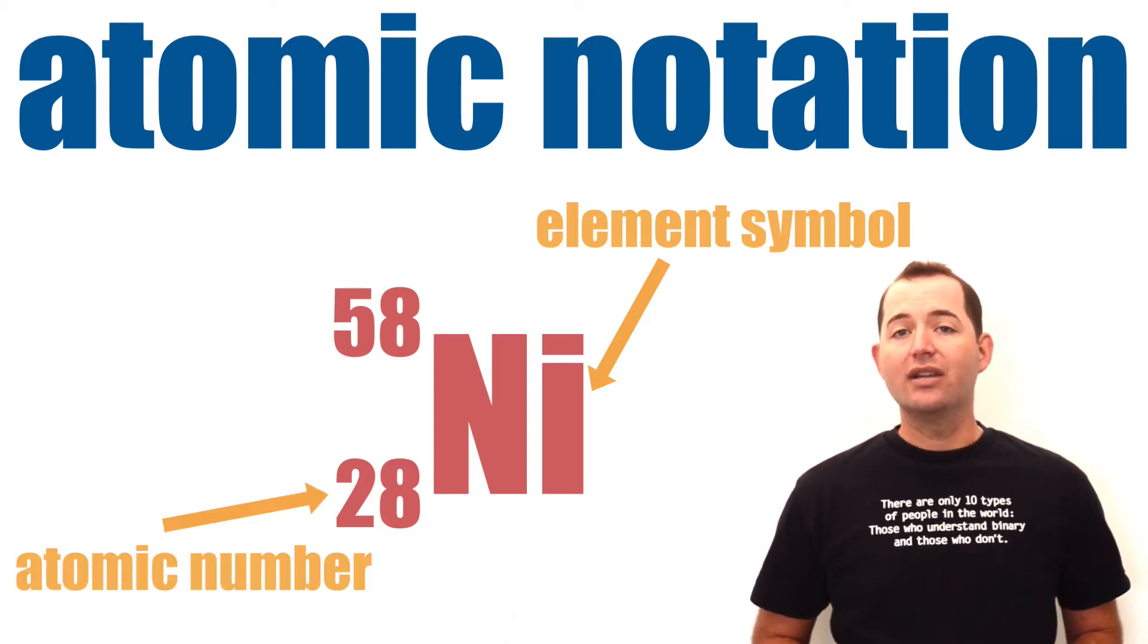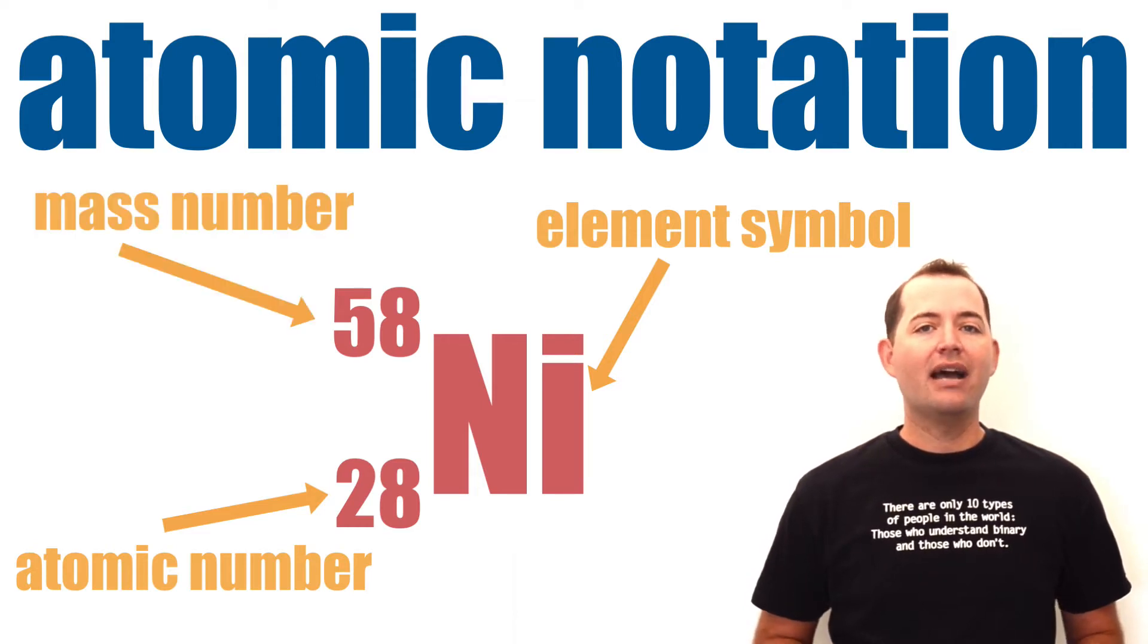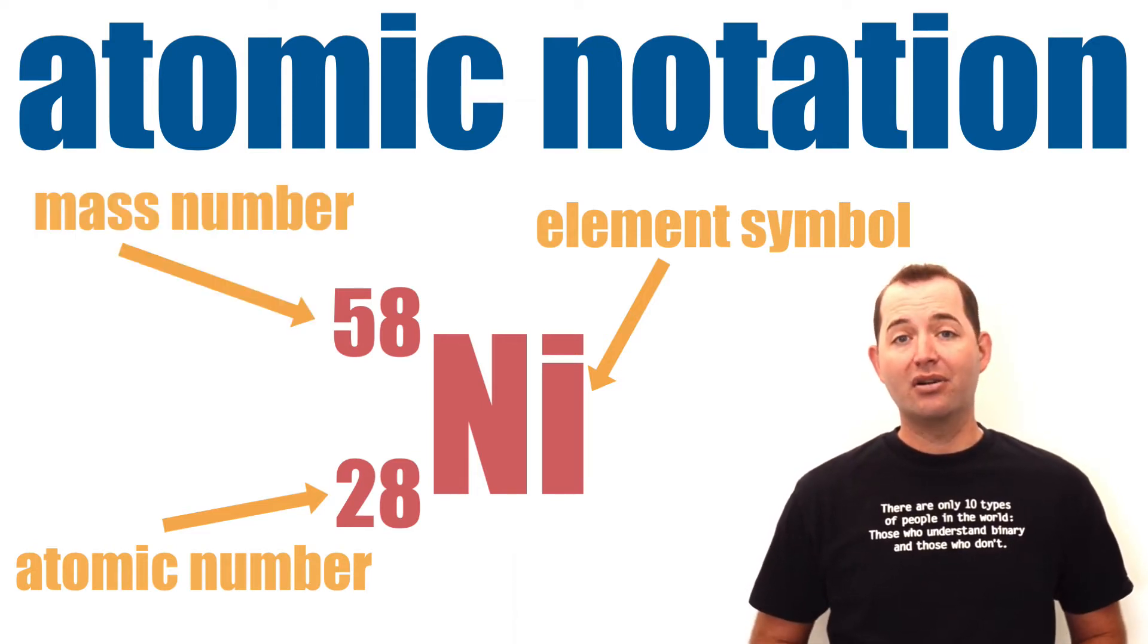We also show the atomic number, which is the total number of protons in the atom, and the mass number, which is the total number of protons and neutrons in the nucleus of the atom.